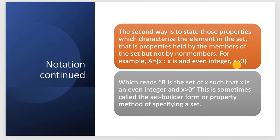Or we should consider this as well: x is greater than 0. Which reads B is the set of x such that x is an even integer and x > 0. This is sometimes called the set builder form or property method of specifying a set.